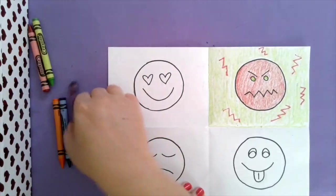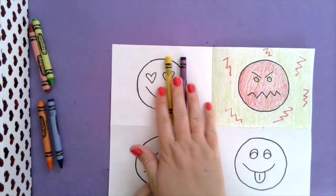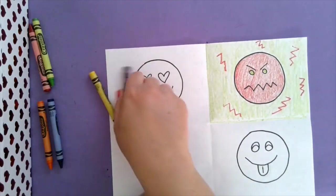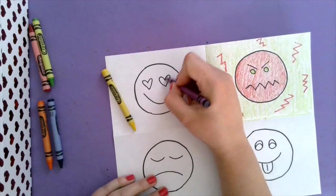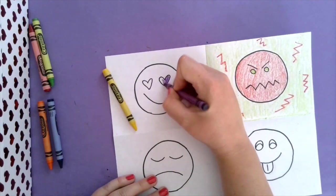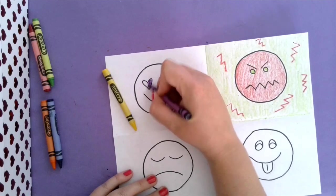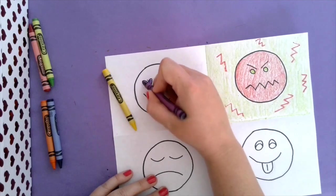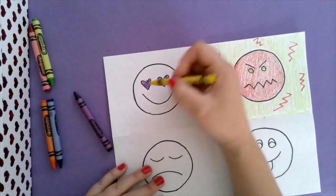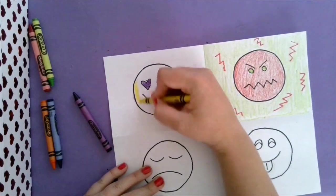Okay let's use purple and yellow for our heart eyes emoji. Let's have it have purple hearts. And then yellow skin.